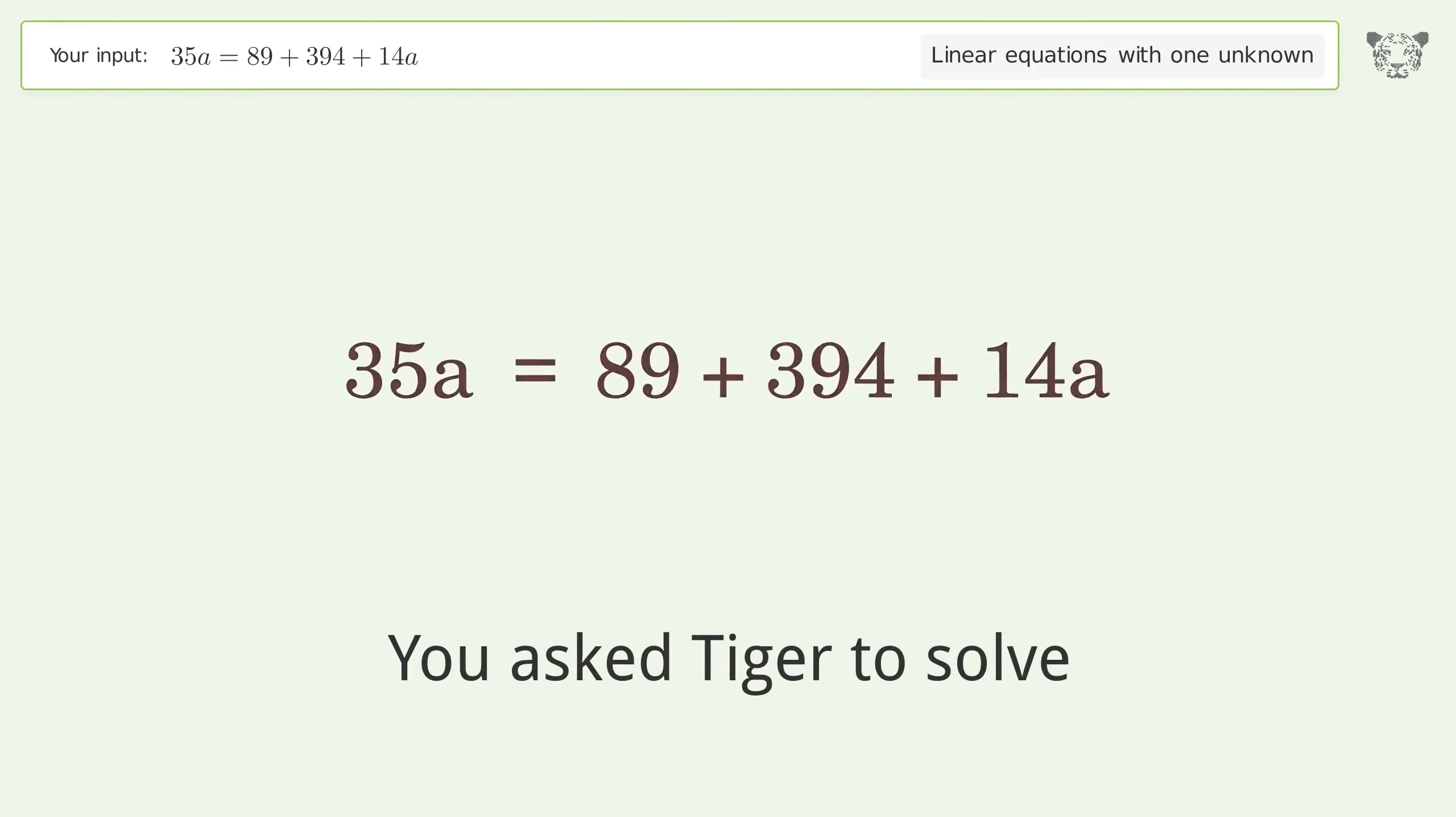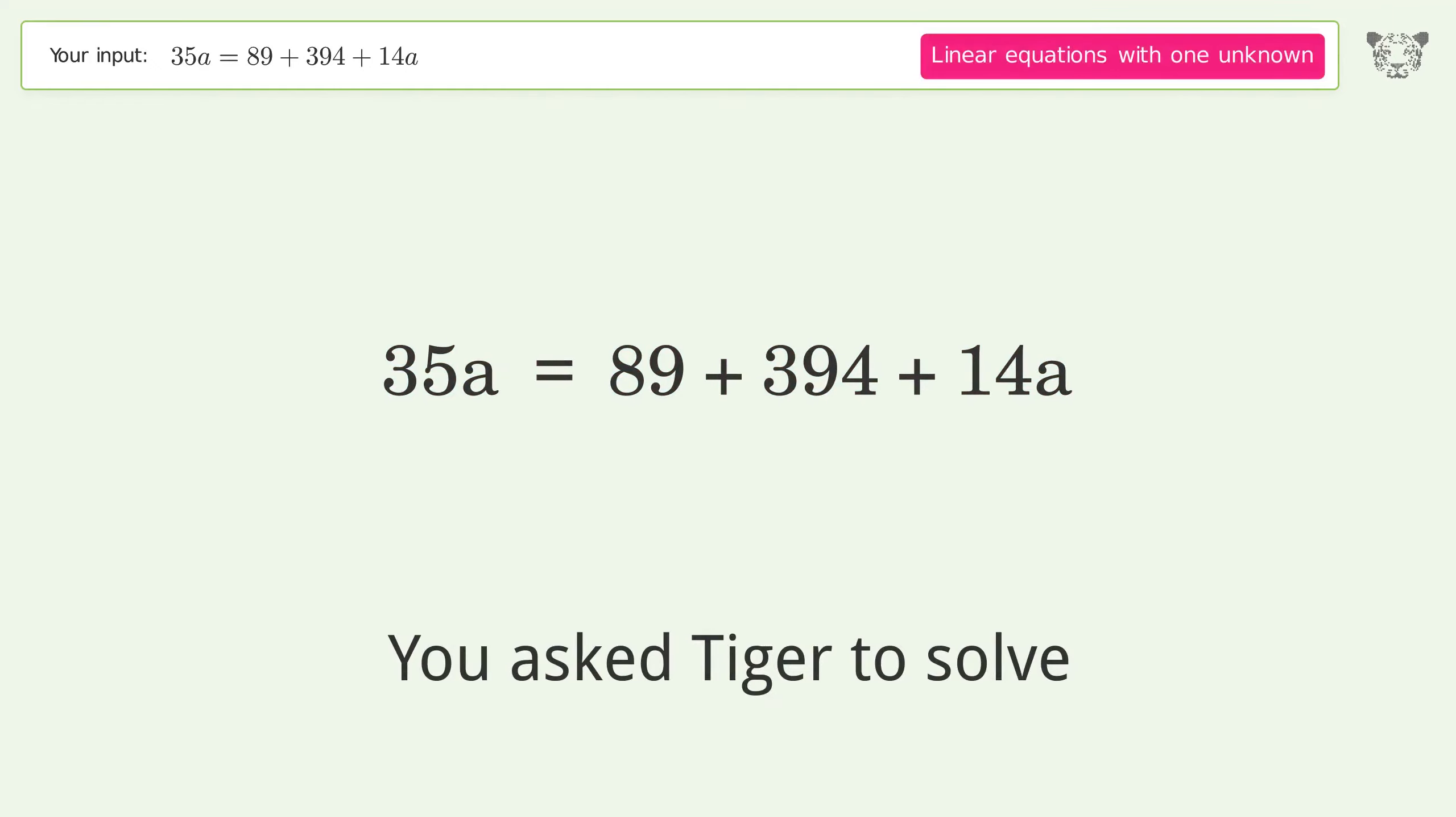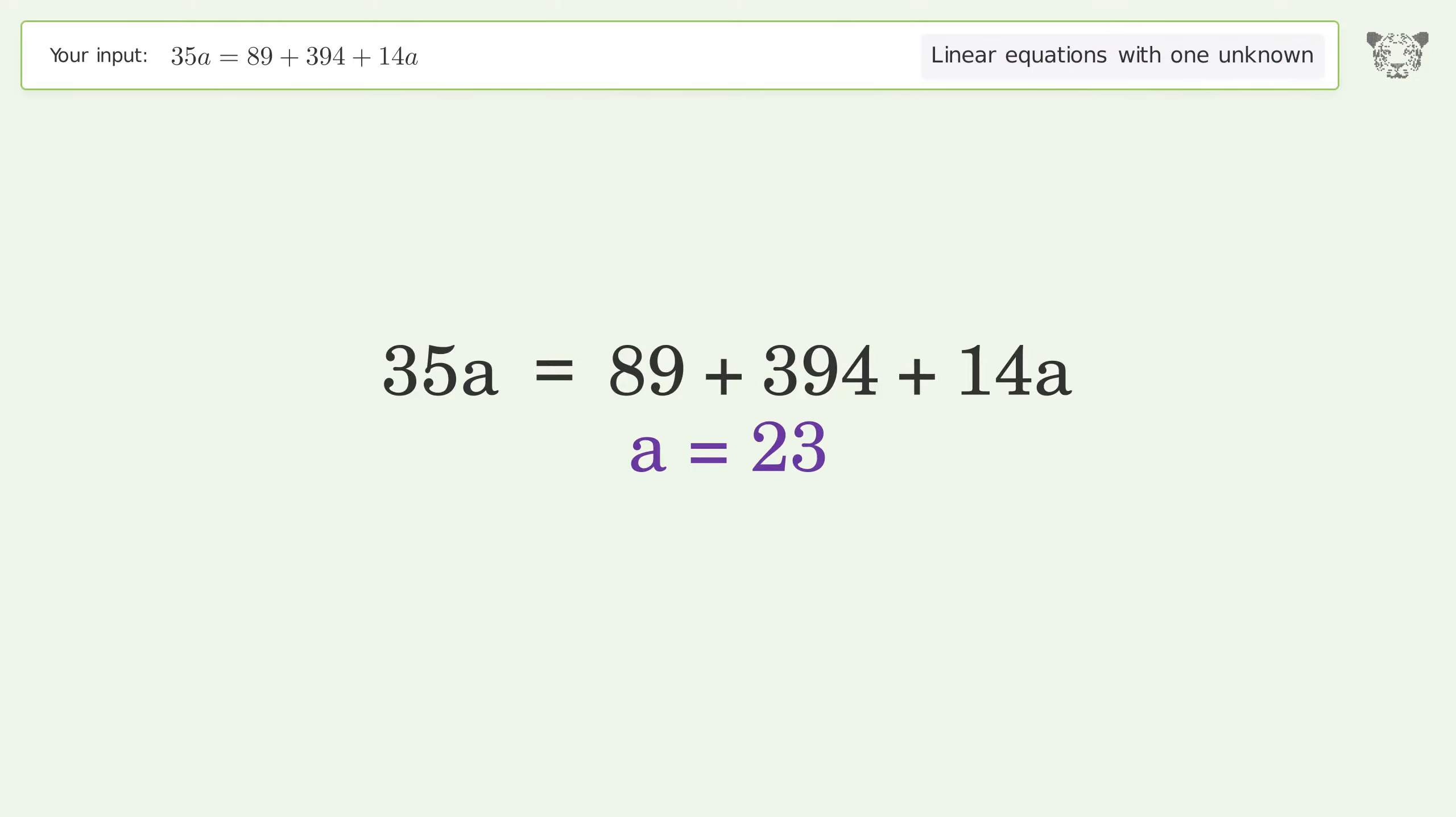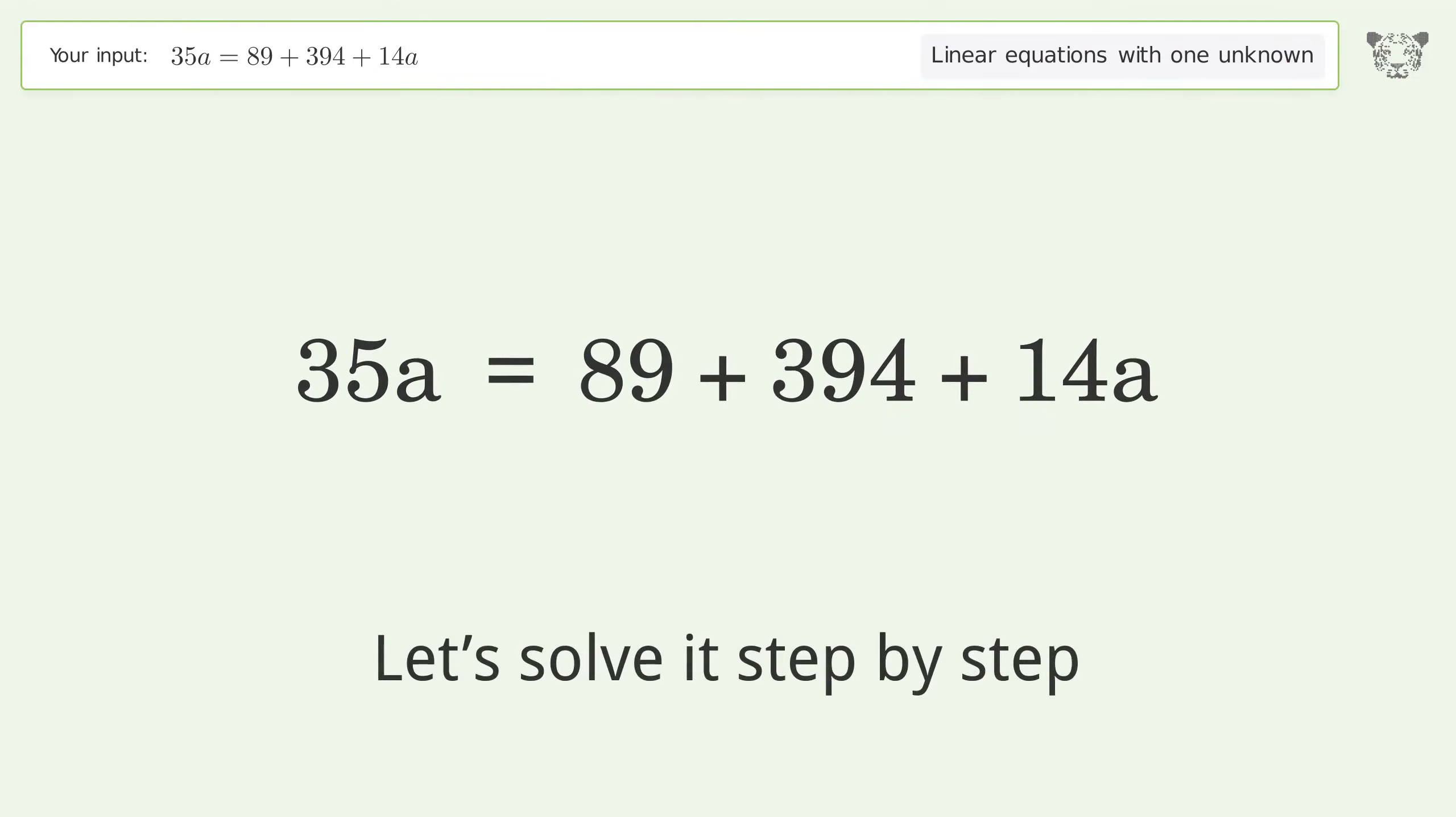You asked Tiger to solve. This deals with linear equations with one unknown. The final result is A equals 23. Let's solve it step by step.